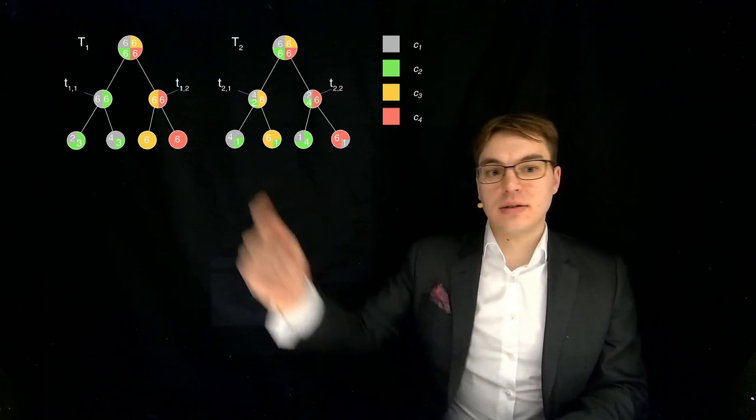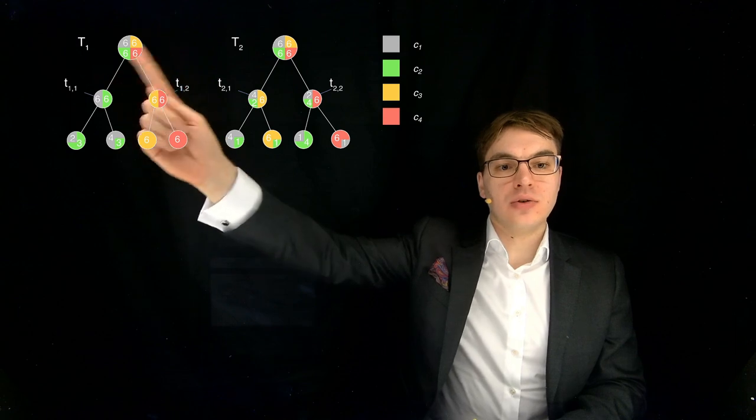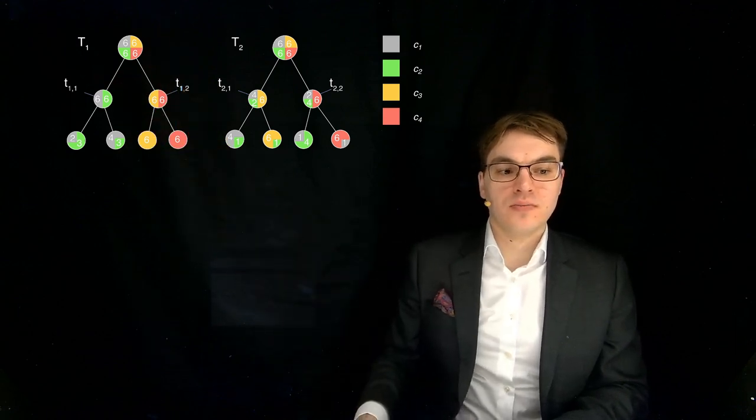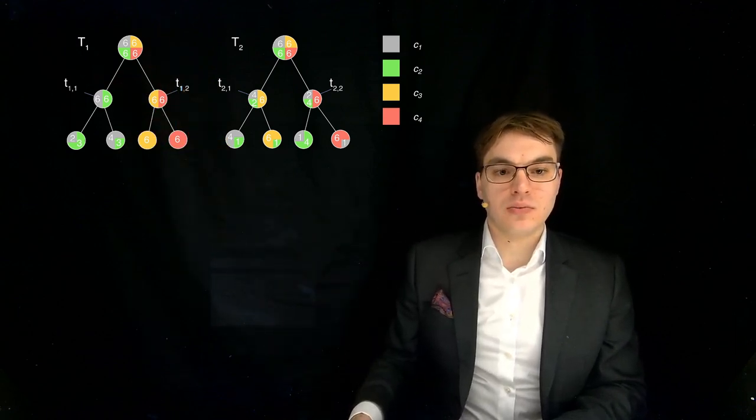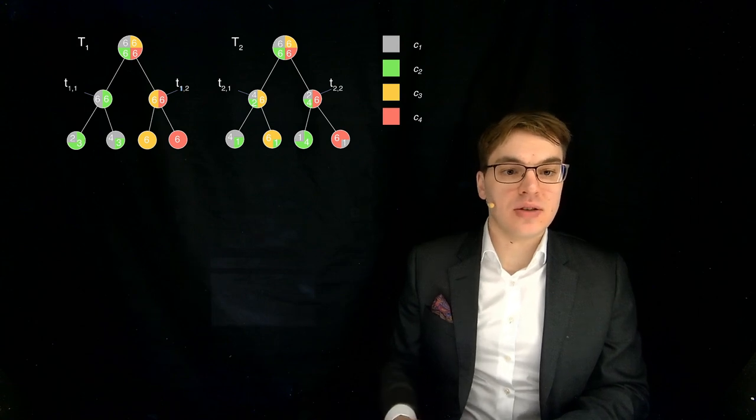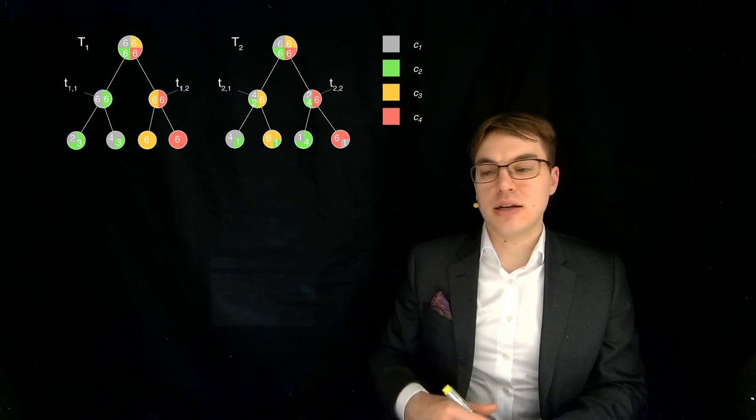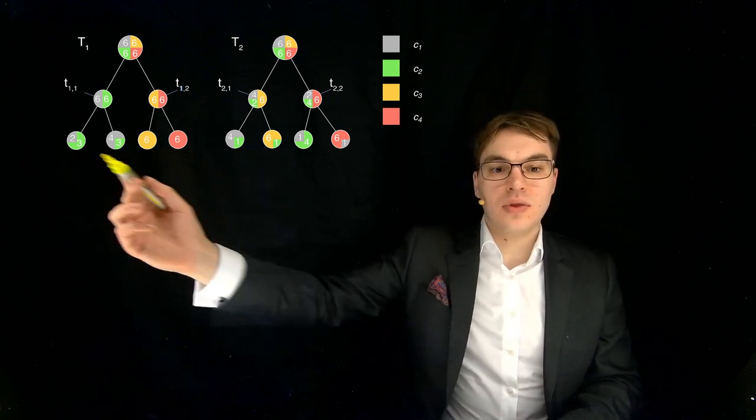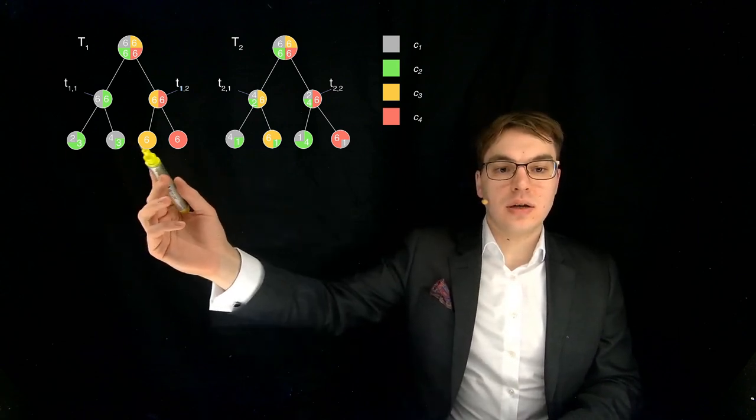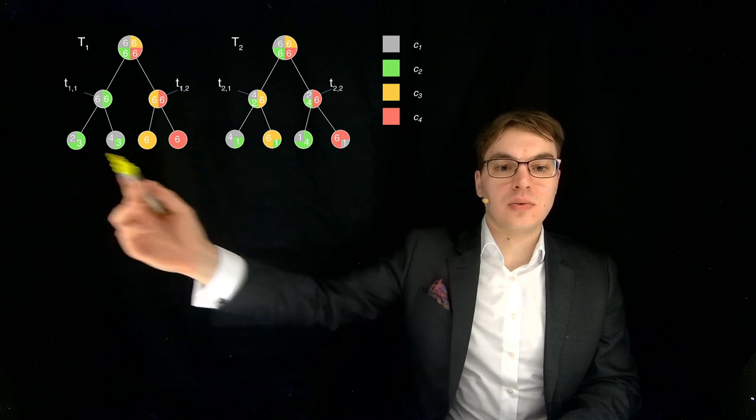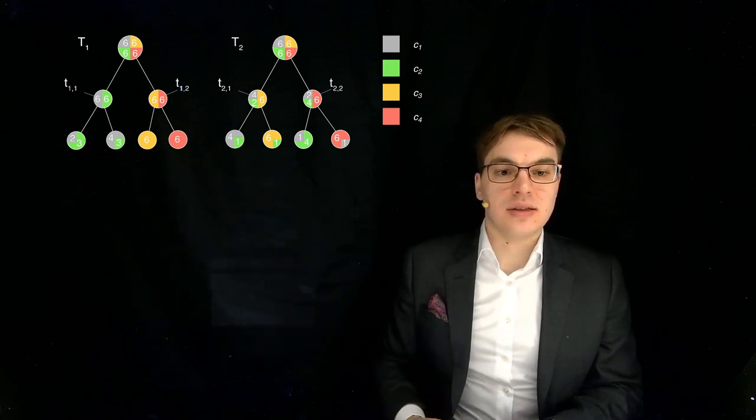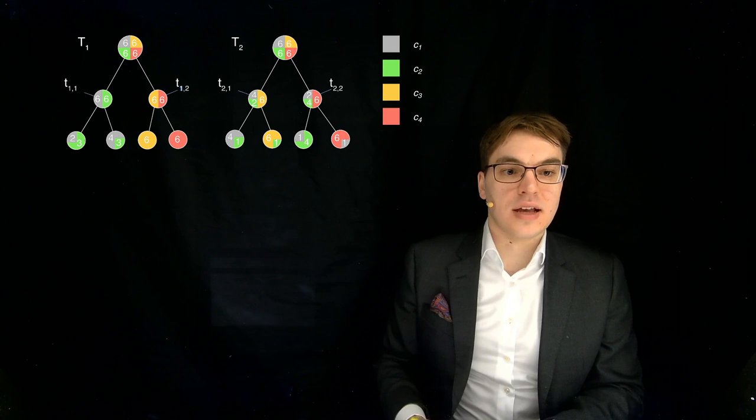So the idea is that for each individual data sample that we put in, we compute which class it would be assigned. And the way this works is that in the end for each of these nodes, these leaf nodes, we would assign a single class that we would assign in any case.